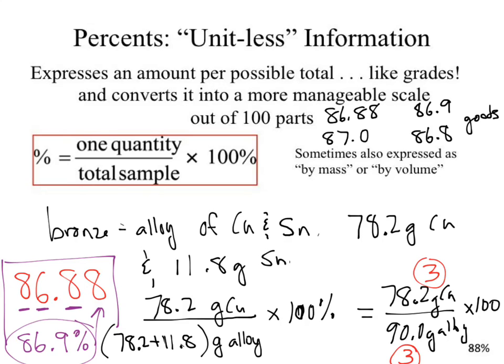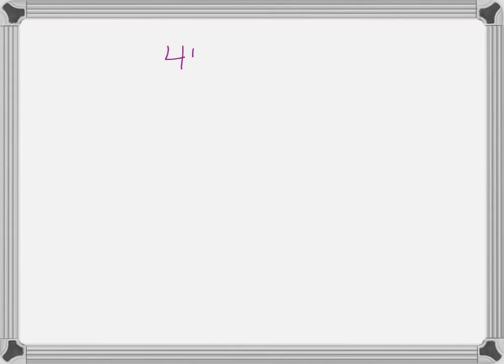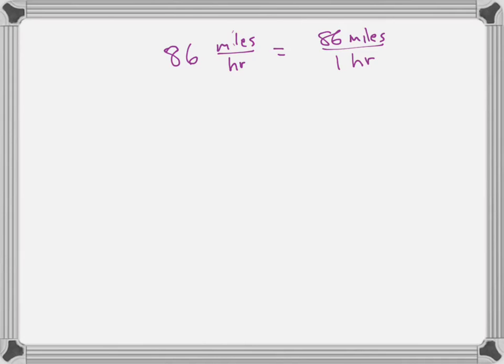I forgot to address one thing from a note in the last video about measurements, particularly when we did conversions. Let's say we have 86 miles per hour — we could rewrite this as 86 miles per one hour. We could use that as a conversion factor. If we wanted to convert 2.00 hours into miles, we'd set up 86 miles in the numerator and hours canceling in the denominator.